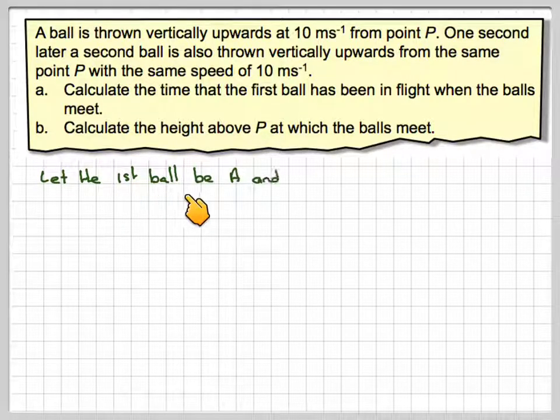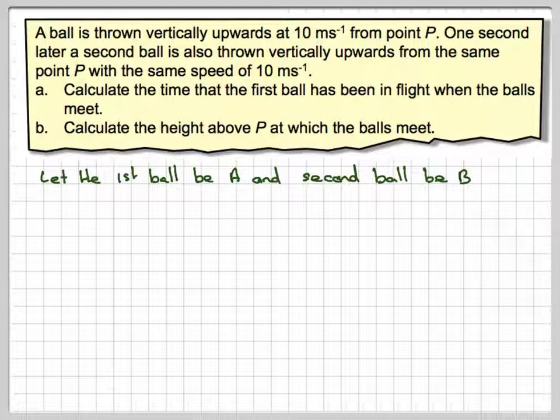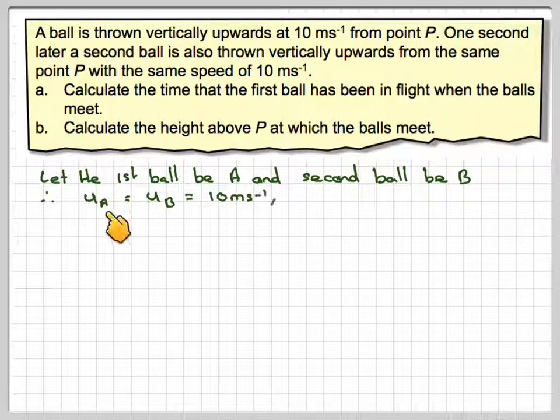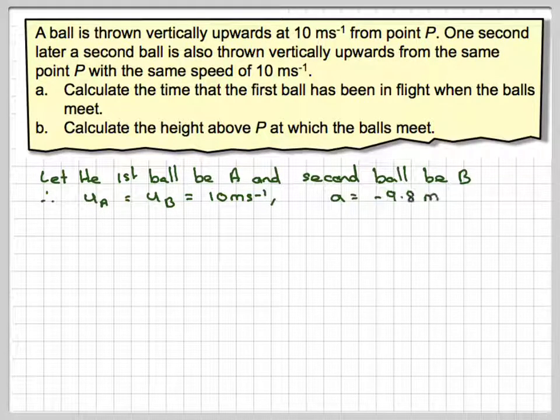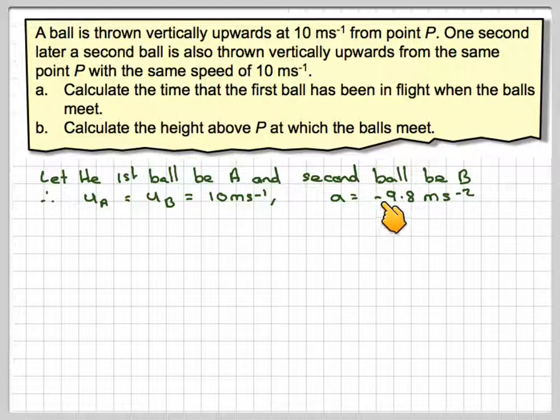If we let the first ball be A and the second ball be B, then we know the initial velocity of A is equal to the initial velocity of B, which is 10 metres per second, and that gravity, the acceleration, is going to be minus 9.8 metres per second squared, acting against the balls.